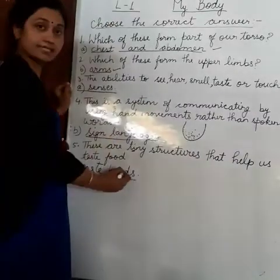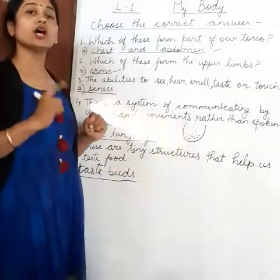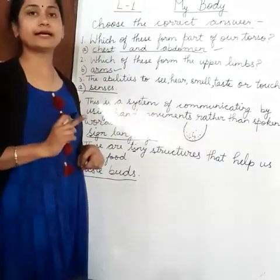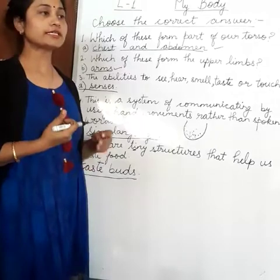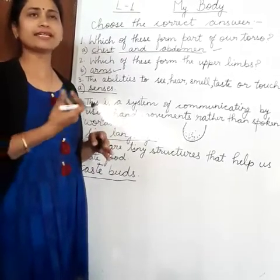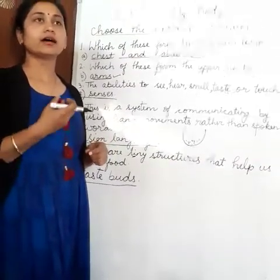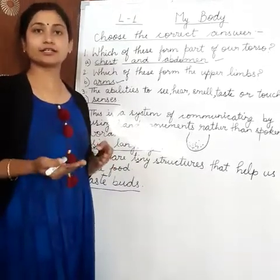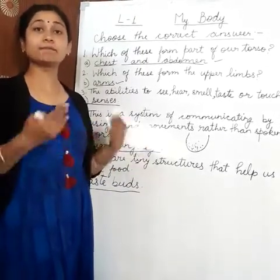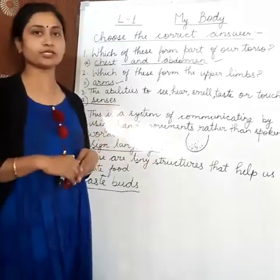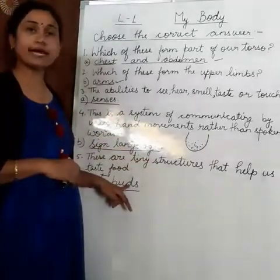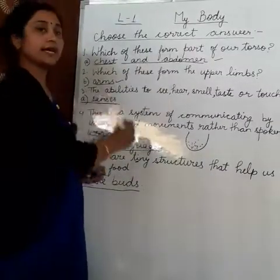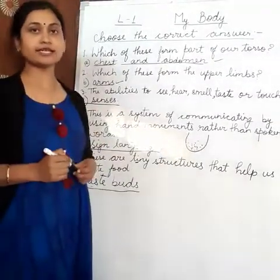What are they? Taste buds. In your book, an option is given — tongue twister. Don't get confused with that. A tongue twister is when you repeat a phrase faster, like 'upper ruler, lower ruler' or 'red blood, bad blood.' That is a tongue twister. But taste buds are what help you taste food. Okay kids, so take down these correct answers in your book.